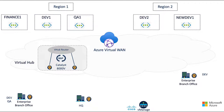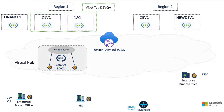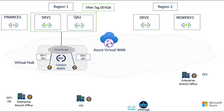Again, using automation and APIs, we can take a subset of our workload VNets and logically group them using a VNet tag. We can now declare a connectivity intent for that tag, and in doing so, vManage will connect the tagged VNets to the virtual hub. The virtual hub will learn the tagged VNet prefixes and use BGP to exchange those routes with our Catalyst 8000v routers inside the virtual hub.